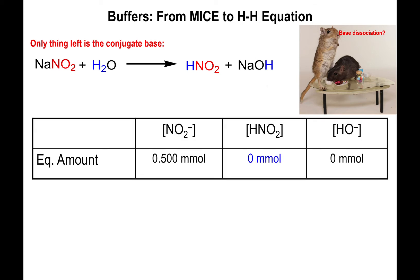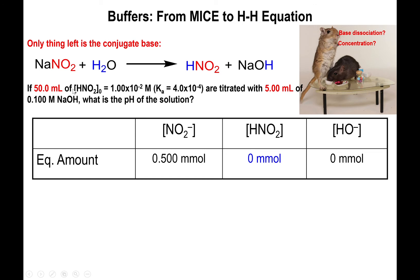We are going to have to switch back to concentration because we can't use the Henderson-Hasselbalch equation — that can only be used for a buffer, and this is no longer a buffer. We are dealing with the base dissociation equation, which requires switching from millimoles back to concentration. We divide the 0.5 millimoles of nitrite by the total volume of 55 mL.